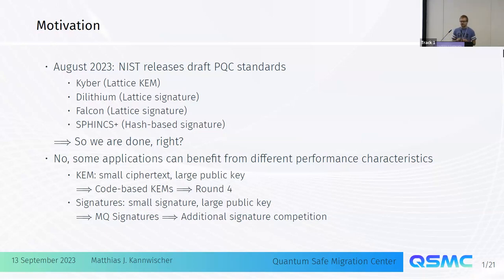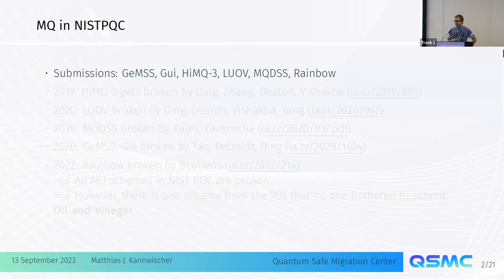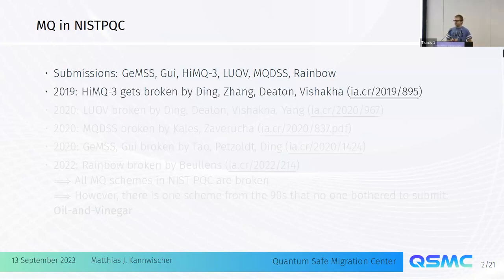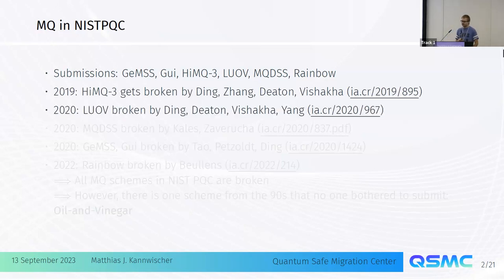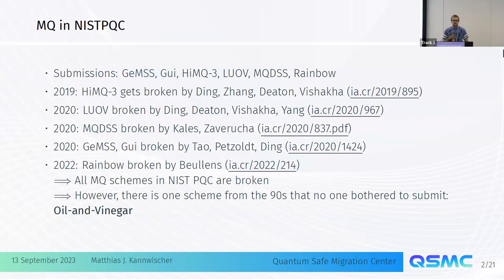MQ has been around for a while. In the first NIST competition, there were already six submissions based on MQ. But after they got submitted in 2017, they one by one got broken in 2019, 2020, and then the last one, Rainbow, died in 2022. So at the end of this NIST competition, all of the MQ schemes were broken.